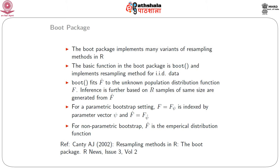The basic bootstrap works by fitting a distribution function f-hat to the unknown population distribution f. Then R samples of the same size as the original sample are generated from f-hat. This is an example of the non-parametric bootstrap. For the parametric bootstrap, we assume that the distribution function f has a parameter psi, and instead of sampling from f-hat, the sample is taken from f of psi-hat, where psi-hat is a consistent estimator of psi.